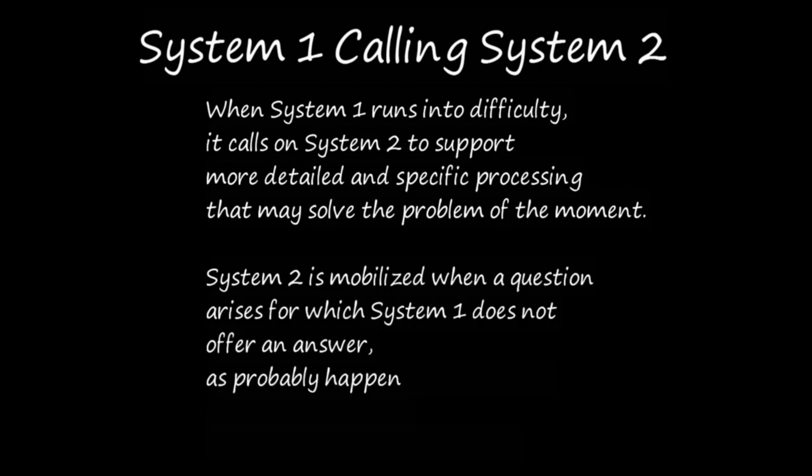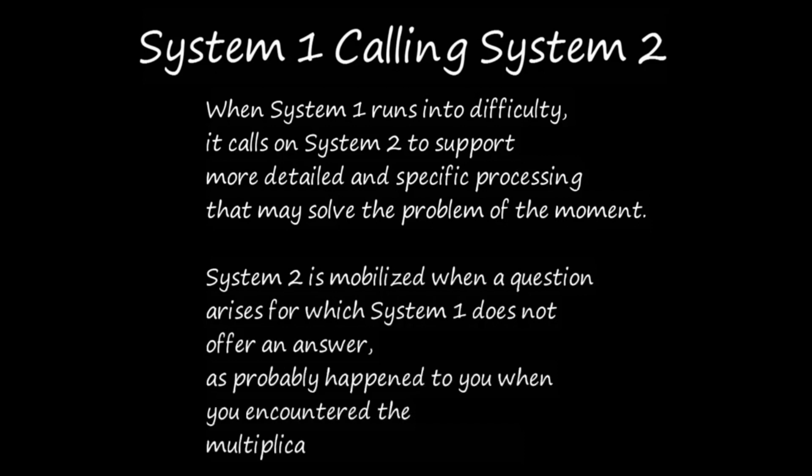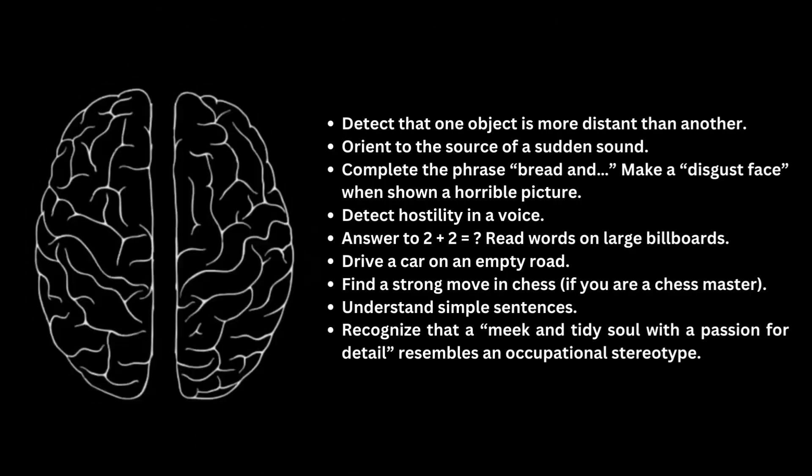In rough order of complexity, here are some examples of the automatic activities attributed to System 1: detect that one object is more distant than another; orient to the source of a sudden sound; complete the phrase 'bread and...'; make a disgusted face when shown a horrible picture; detect hostility in a voice; answer '2 plus 2 equals 4'; read words on large billboards; drive a car on an empty road; find a strong move in chess if you are a chess master; understand simple sentences; recognize that a meek and tidy soul with a passion for detail resembles an occupational stereotype.